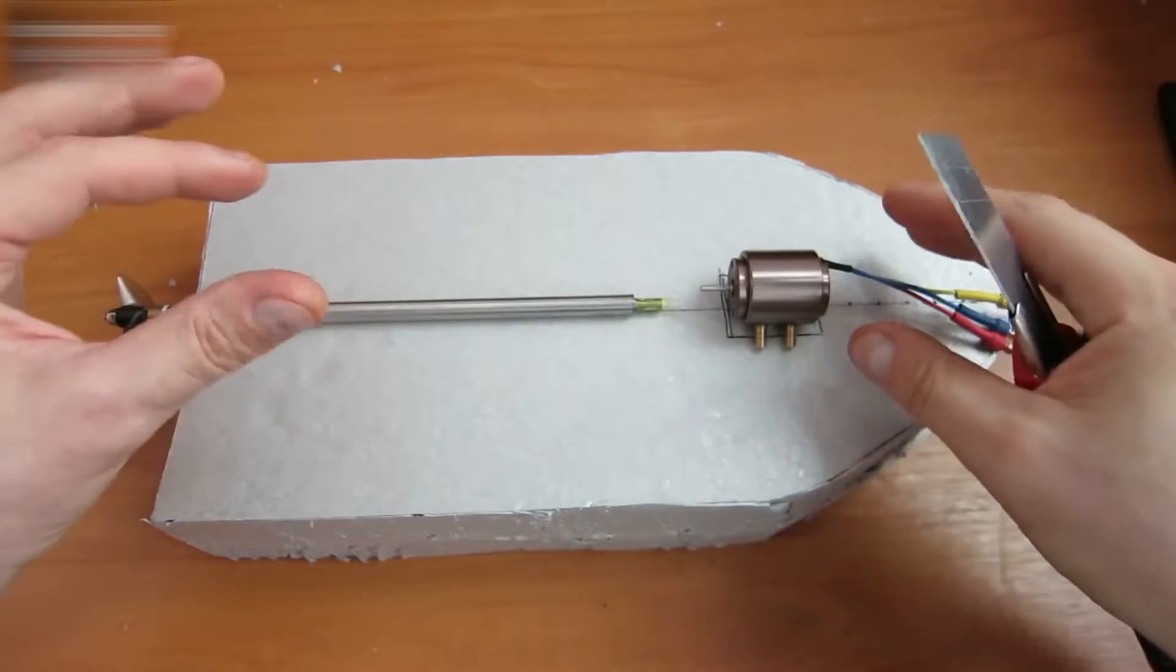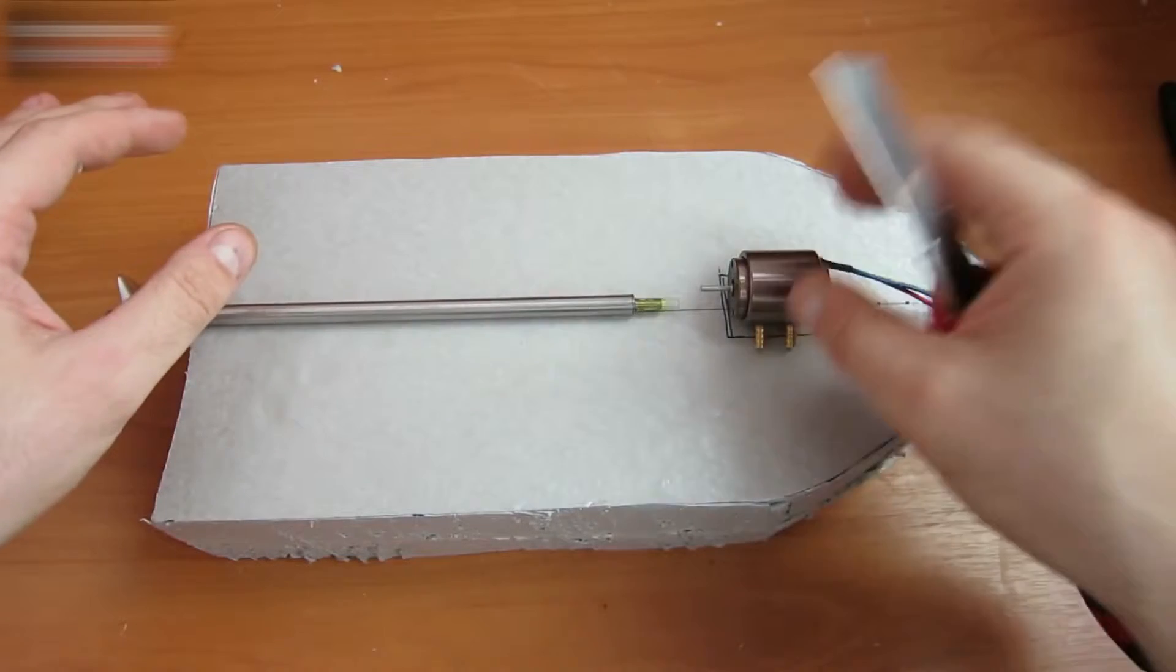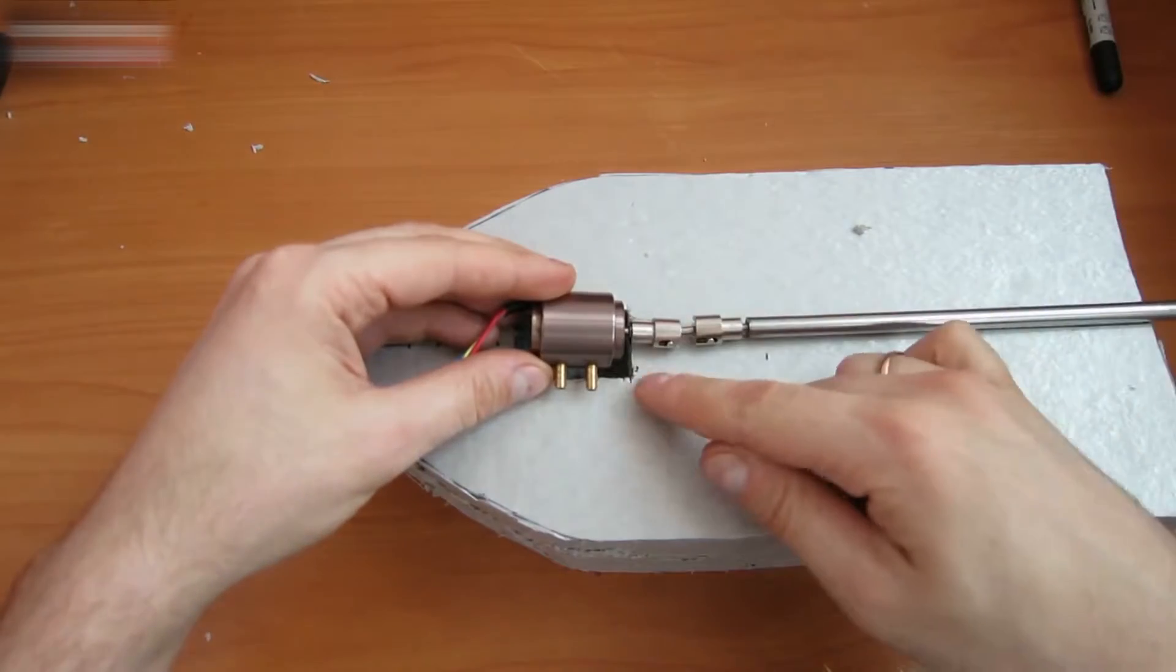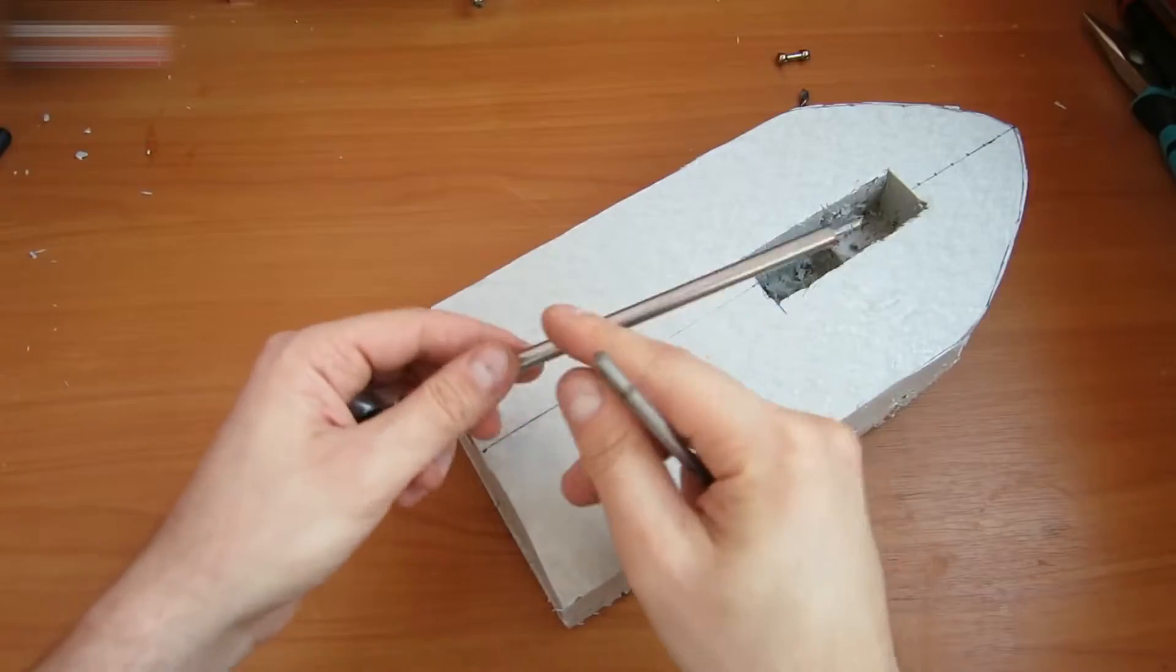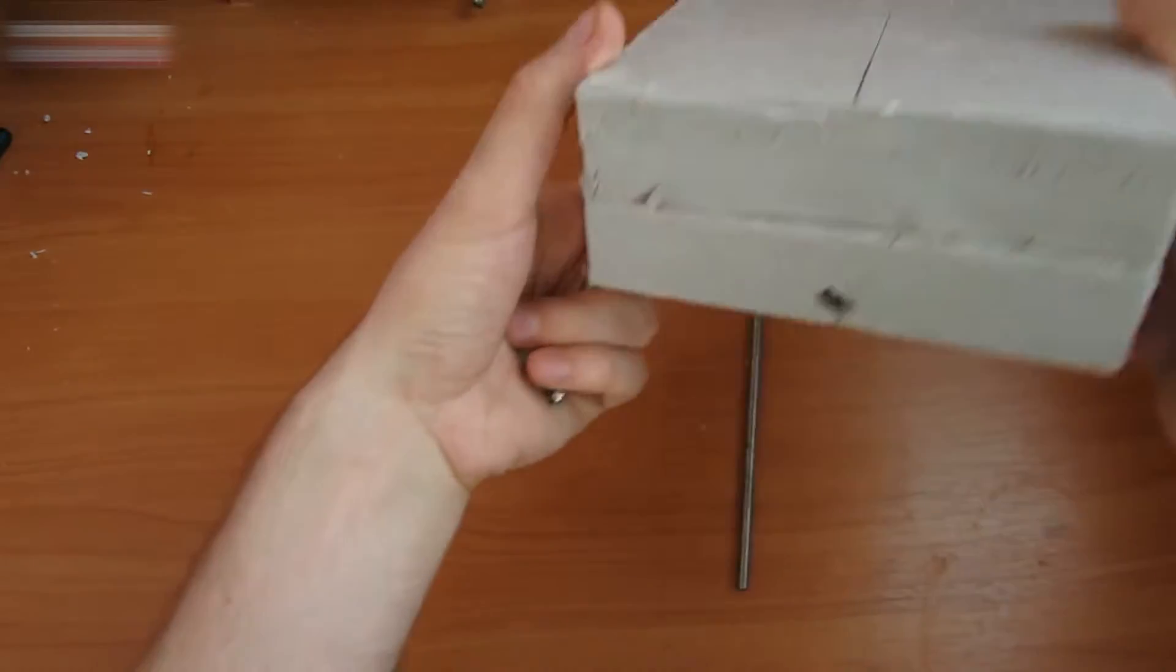Make holes and cutouts for the equipment. The motor one goes first. Make a slot for the transmission and a hole for the roller. The steel tube diameter is 7mm. I made a hole with a 5mm drill.